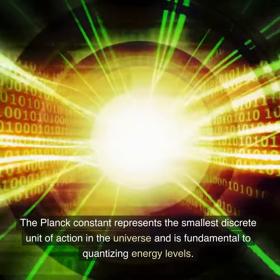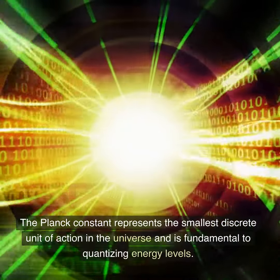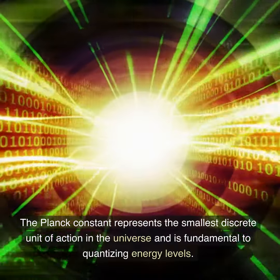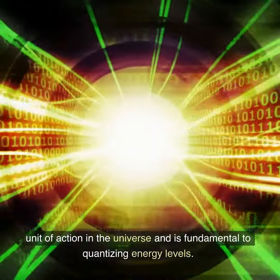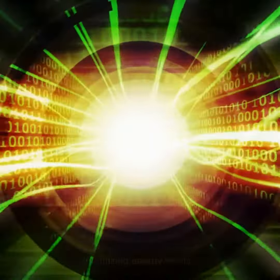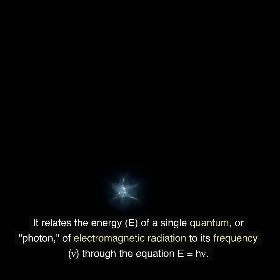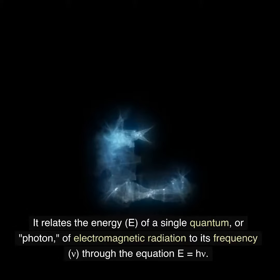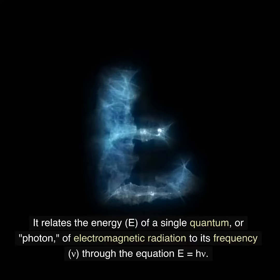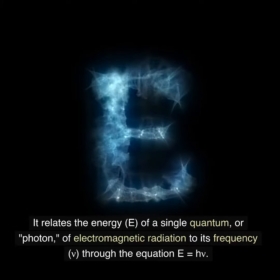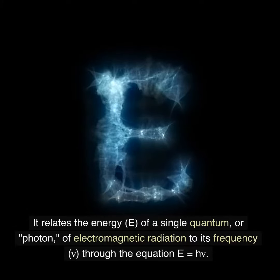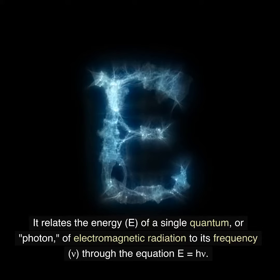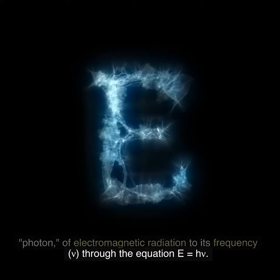The Planck constant represents the smallest discrete unit of action in the universe and is fundamental to quantizing energy levels. It relates the energy, E, of a single quantum, or photon, of electromagnetic radiation to its frequency, nu, through the equation E equals h nu.